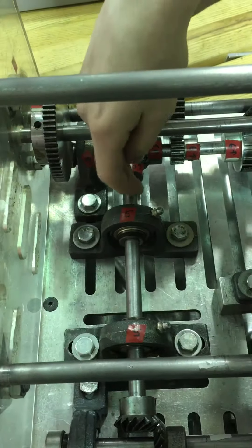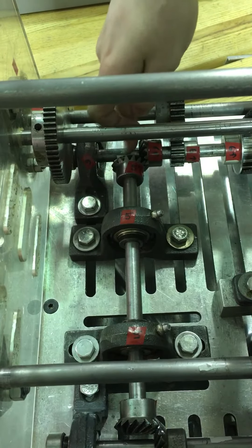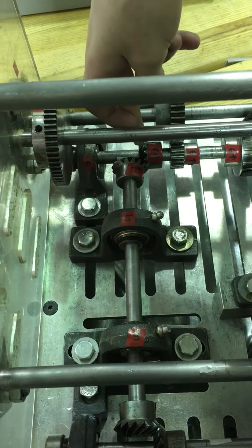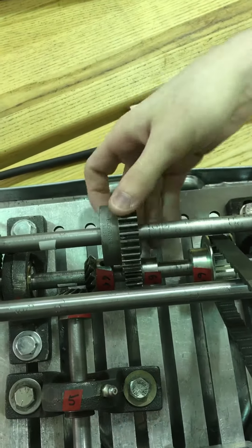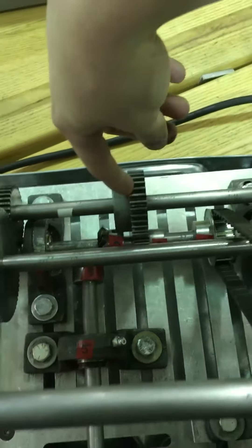Shaft five drives shaft six also through a pair of right-angle miter gears. Shaft six is driving shaft eight through a pair of spur gears.